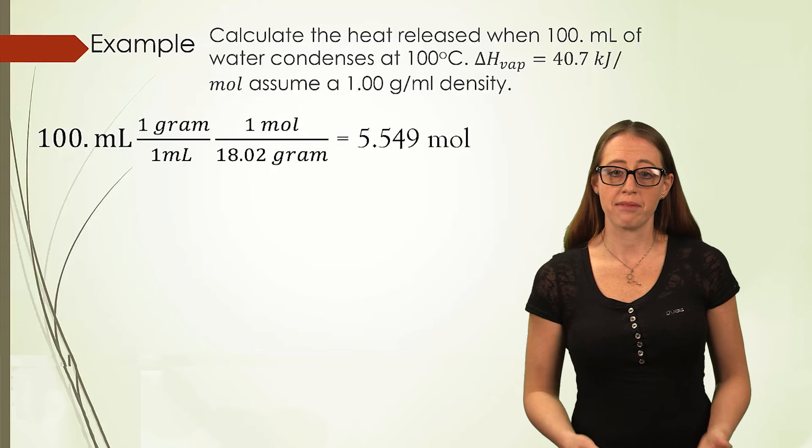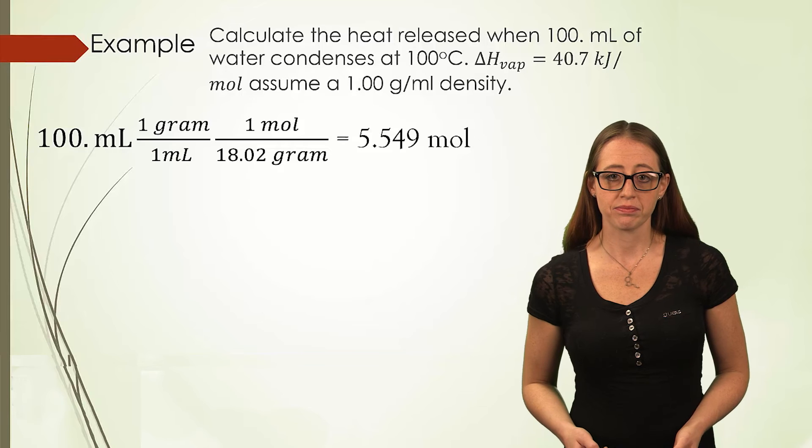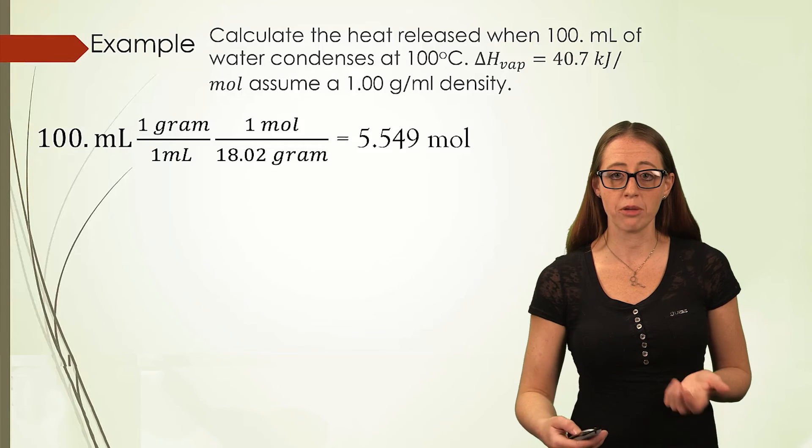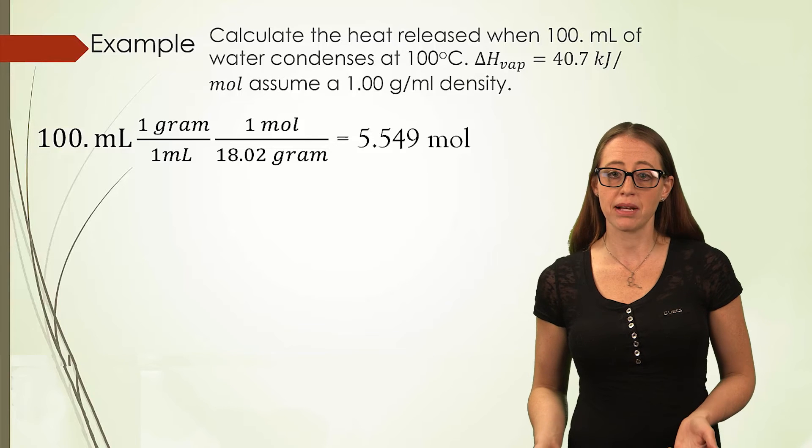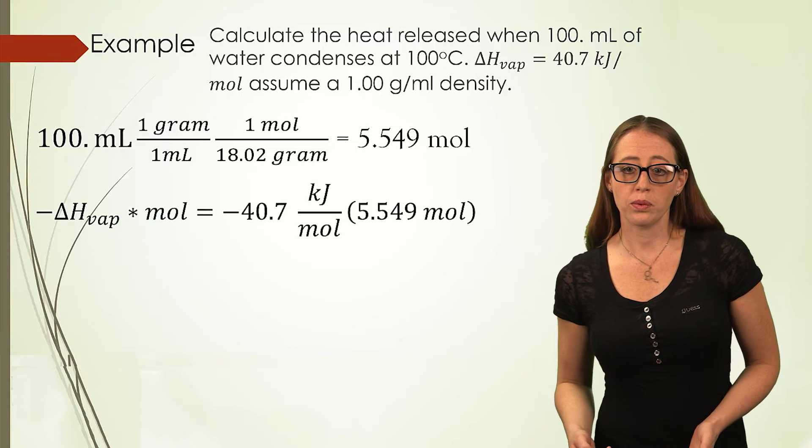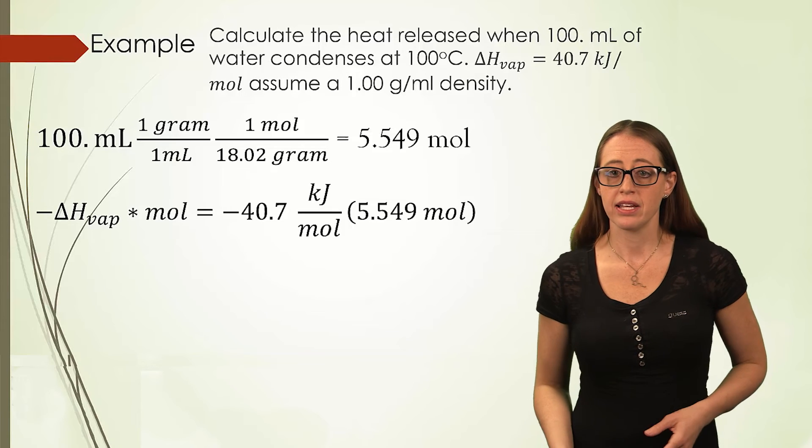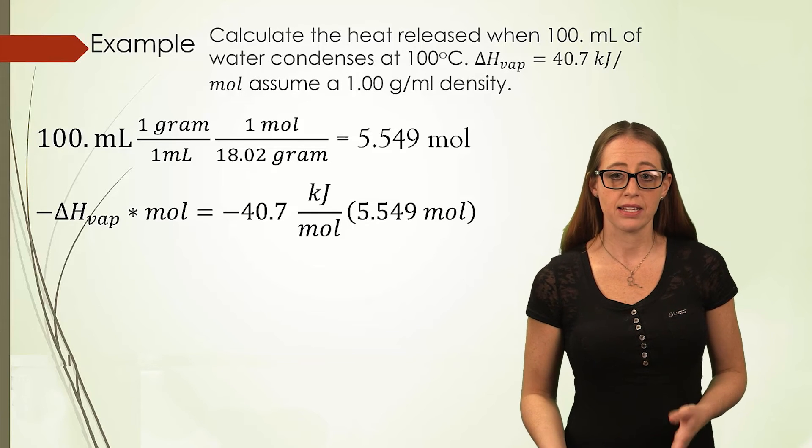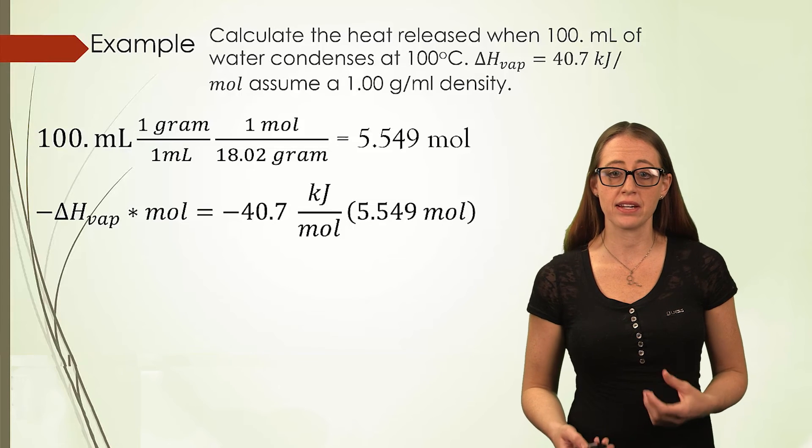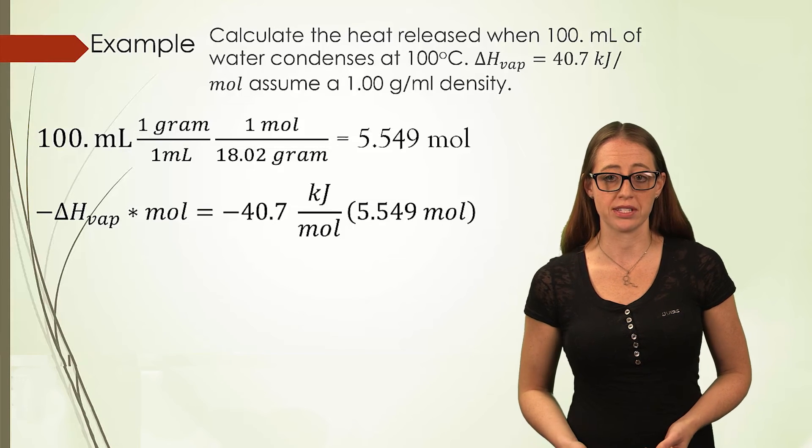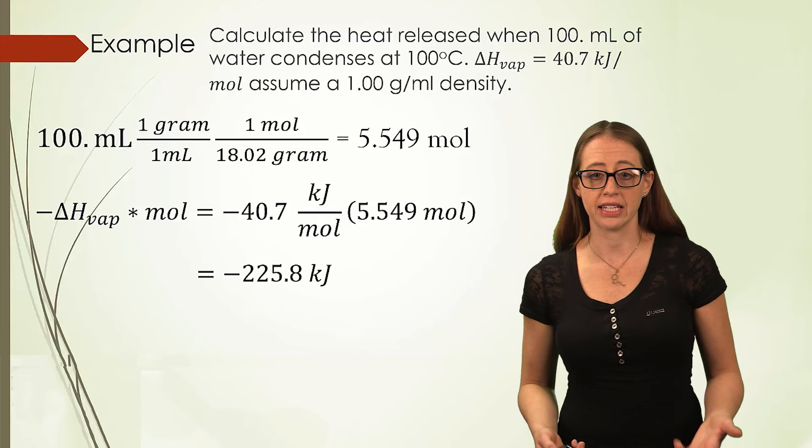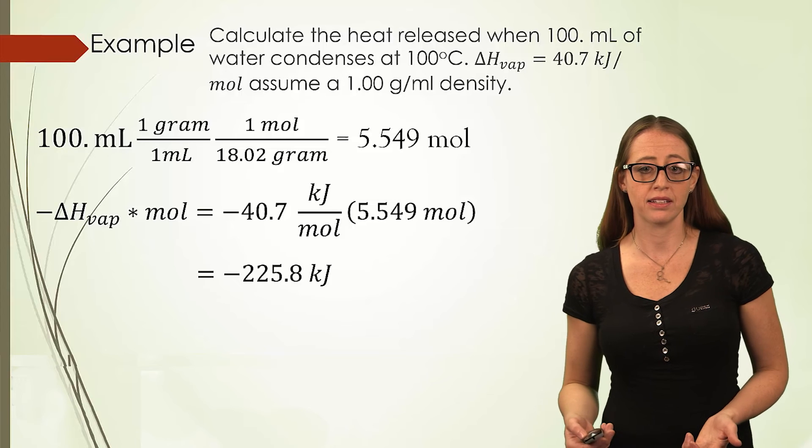When we do this we get 5.549 moles. We can then multiply that by the heat of vaporization. Note that we can use the units on the heat of vaporization to help us decide whether we're multiplying by moles or grams. We'll also need to make this heat negative, since this is the heat released, and that's typically denoted by using the negative sign to signify that it is an exothermic direction of the transfer. So from here we would get our answer of negative 225.8 kJ.